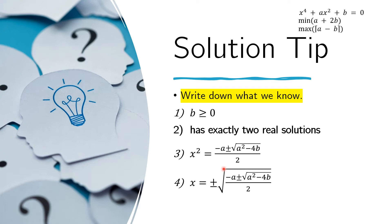We can get x from that expression by taking the square root of both sides, giving x as plus or minus the square root of that entire expression. This is the general form of the solution, and we have four solutions: the positive and negative of each of the two values from the plus-or-minus inside.